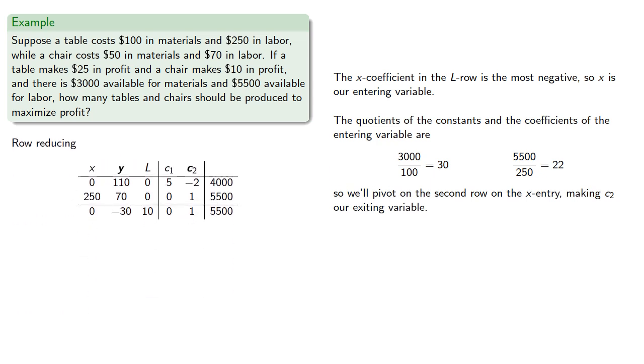Row reducing gives us, and note that for convenience, we're not going to try and get the pivot entries all the way down to 1 because that would introduce a mess of fractions and it wouldn't make a difference in our solution.